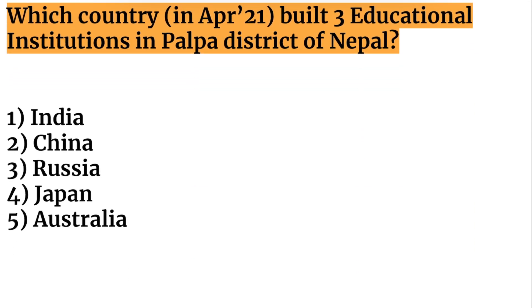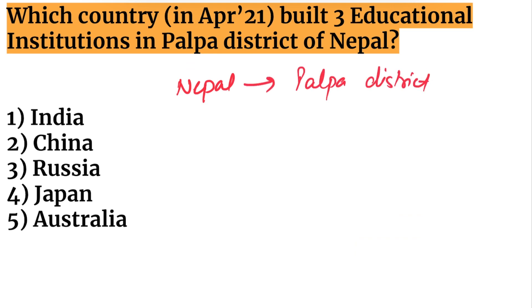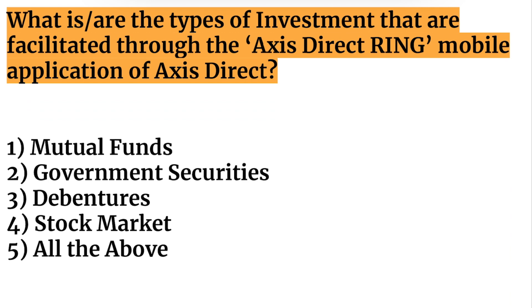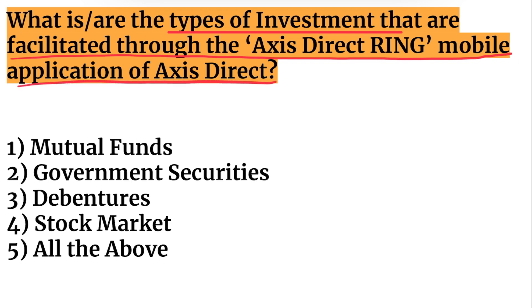Which country built three educational institutions in the Palpa district of Nepal? India built these three educational institutions as a friendly gesture. Additionally, the Axis Direct Ring is a mobile application by Axis Direct that deals with stock market investments.